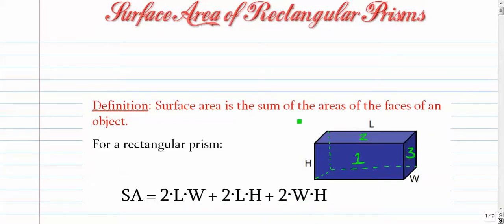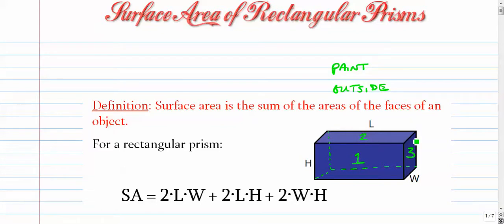When we calculate the surface area of our solids, we're thinking about the outside — surface area is outside, all the stuff on the outside. So in real life, if you wanted to paint this box, it would be how much paint you would use. Or if you wanted to put wrapping paper around a gift, it would be how much paper you would use. So let's try a few.